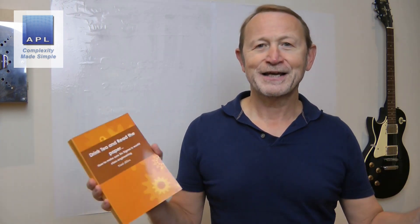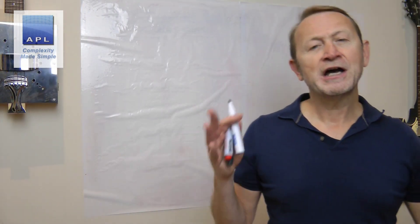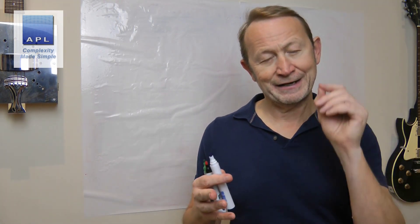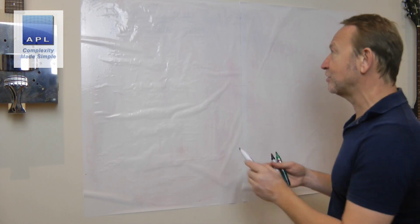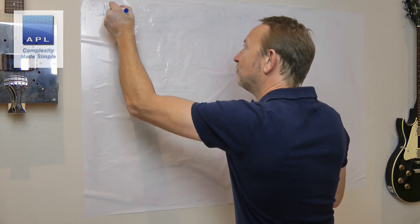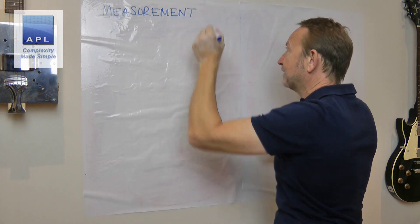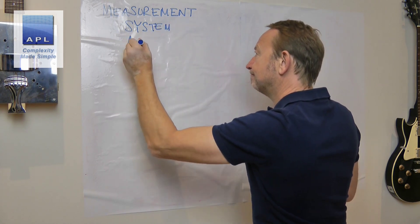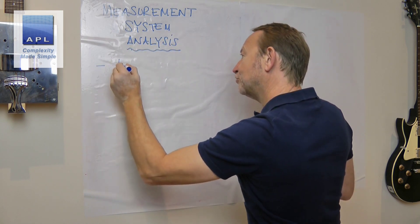Now let's get on to today's video. In this video, what we're going to be looking at is some details of how to conduct an MSA correctly. I'm not going through the entire MSA process — I'm dealing with some important points about measurement system analysis, also known as Gauge R&R. These are some important points about measurement system analysis.